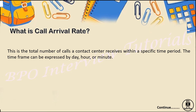The next KPI is call arrival rate — the total number of calls a contact center receives within a specific period of time. The time frame can be specified by day, hour, or minute. For example, if a shift runs from 9 a.m. to 6 p.m. — a 9-hour duration — then per hour, how many calls are given by the client to that respective process or contact center is the call arrival rate. A certain percentage of those calls should be answered in that particular hour, minute, or day.